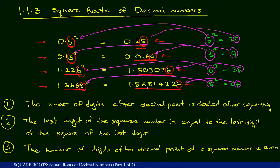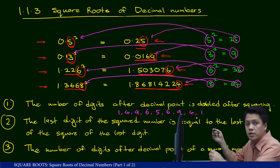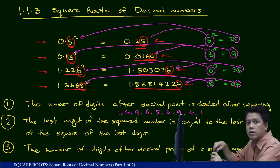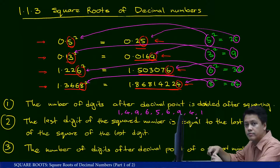Linking back to the first observation, the last digit of a squared decimal can only be 1, 4, 5, 6, or 9 — since 6 squared ends in 6, 7 squared ends in 9, 8 squared ends in 4, and 9 squared ends in 1. So if the last decimal digit is 2, 3, 7, or 8, then most likely the square root of that number is irrational and cannot easily be found using the division method. Let's take a look at examples in the next video.